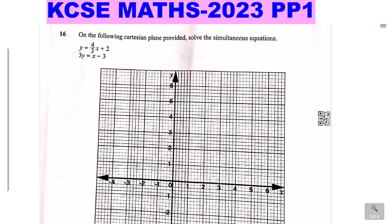y is equal to 4/3x plus 2. Then the second one is 3y is equal to x minus 3. Now to solve this simultaneous equation graphically, we are going to draw each of these lines using the equations provided.